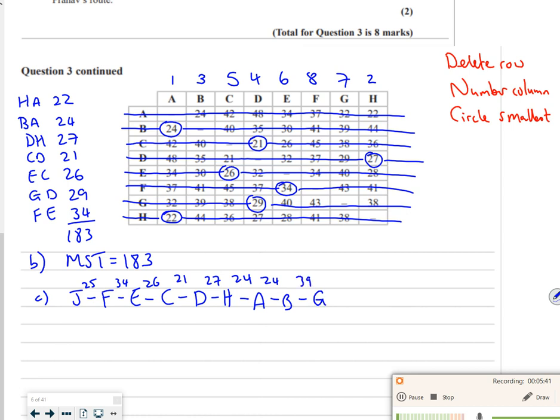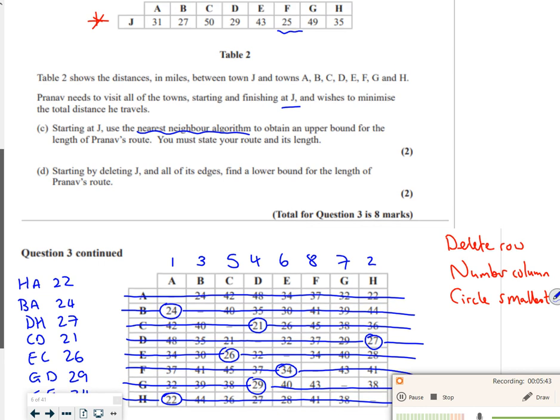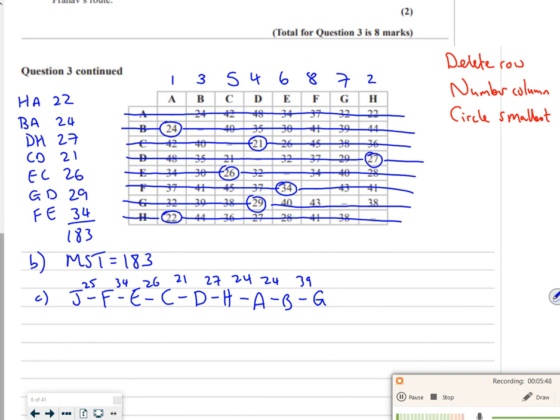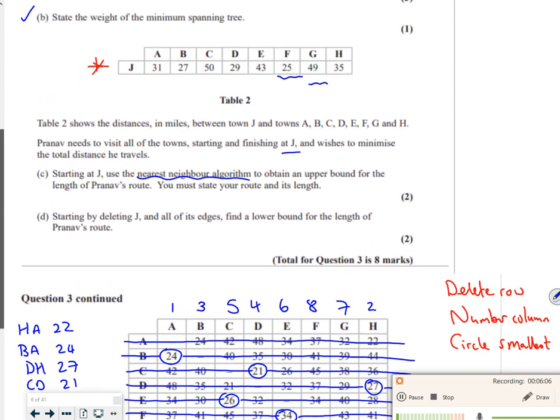I've visited everywhere, so now I just need to get back from G back to J, which is 49. So that gives me 267. So my upper bound using nearest neighbor is 267. So that's part B done, so I've found the upper bound.